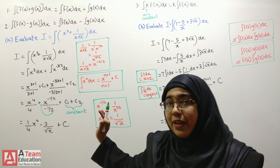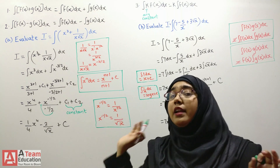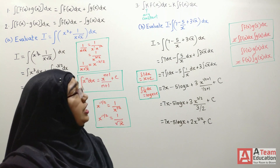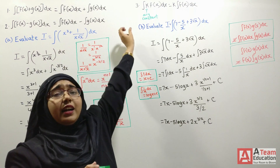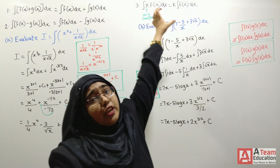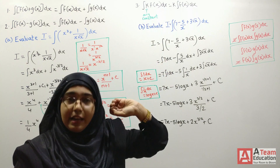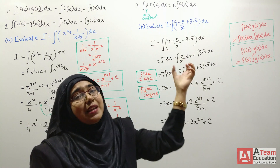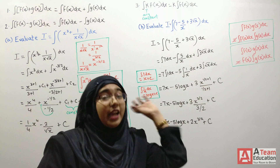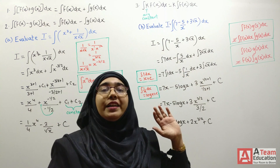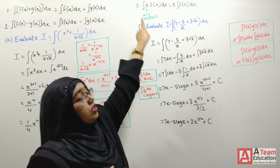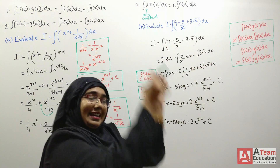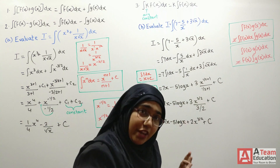This is a simple application of the sum rule. Now we will see the constant rule. The constant rule states that if a constant k is multiplied by a function f(x), that constant can be taken out of the integral sign, and you simply integrate f(x) separately. That means the integral of k times f(x) equals k times the integral of f(x).